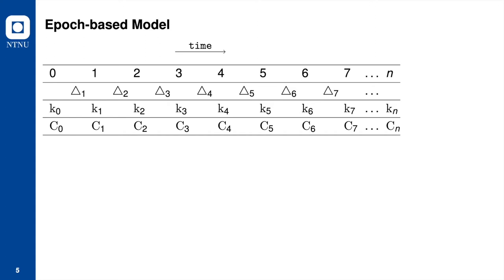However, this property is a double-edged sword. The update token can potentially be used to derive ciphertext and keys in adjacent epochs and leaks additional information.